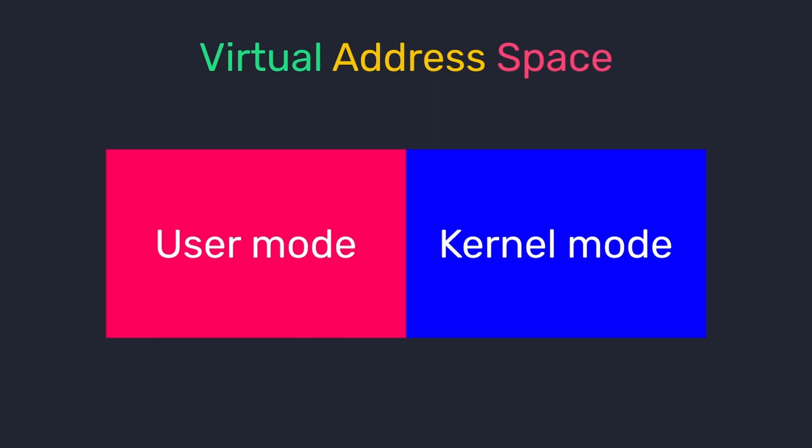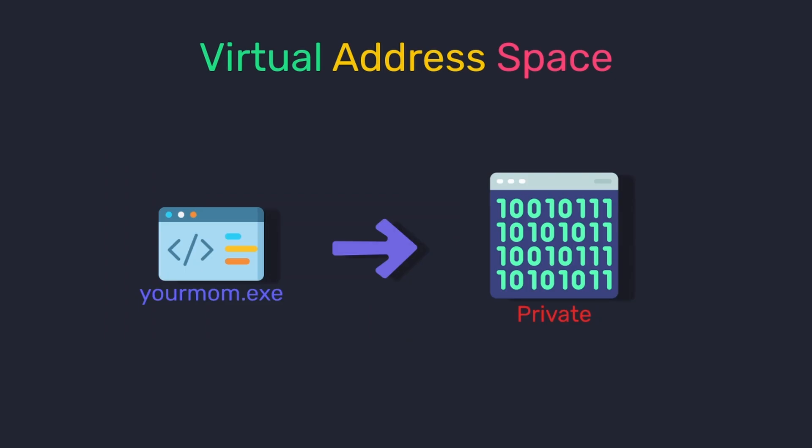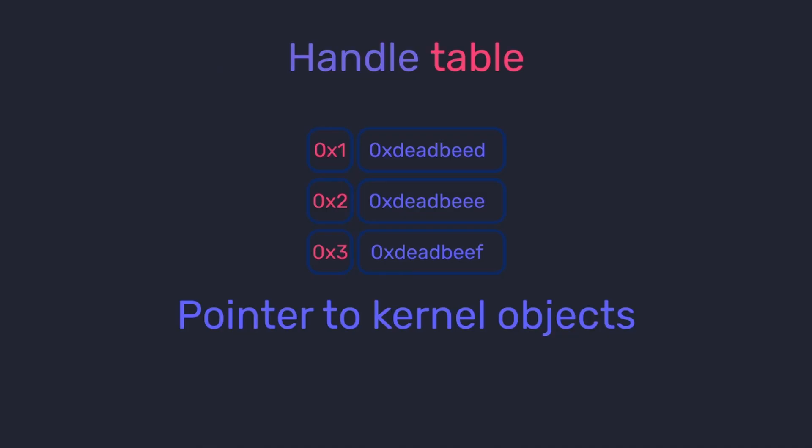The user mode part is used to store data structures, variables, code, and other stuff, while the kernel mode region of memory is used to store data structures and other information regarding the process. This virtual address space is also private, meaning it can only be accessed by the process which it belongs to. Next up we have a handle table. If you do not know what handles are, these are basically a type of object on Windows which allow user mode code to indirectly access kernel mode objects.